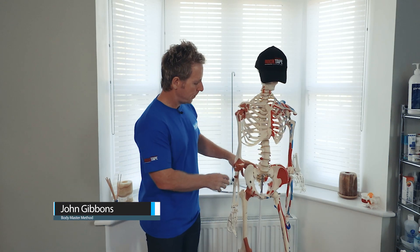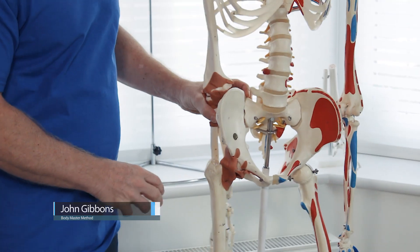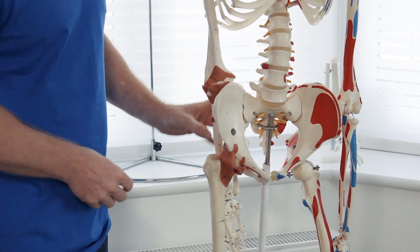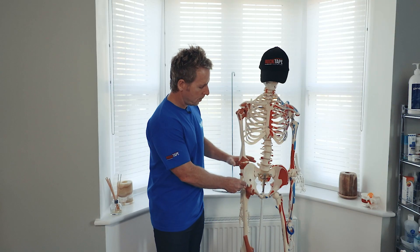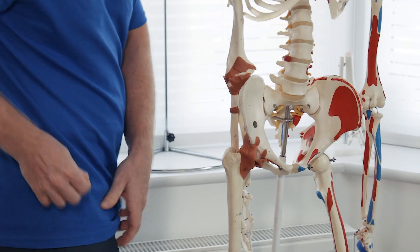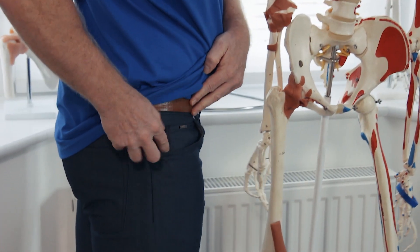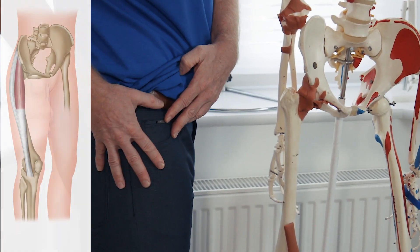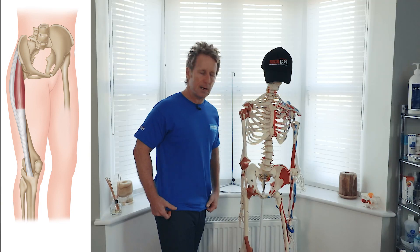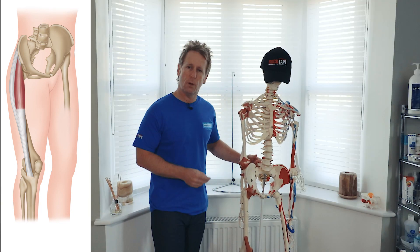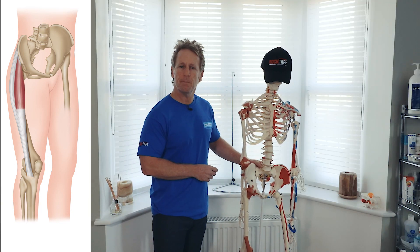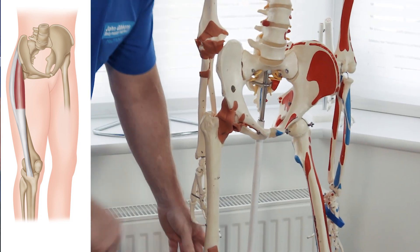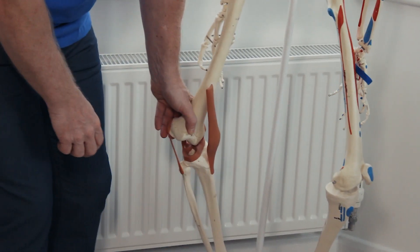The tensor fascia lata is a muscle that comes from the inferior part of the anterior superior iliac spine — roughly where a pocket would be. It travels down as a band or tract called the iliotibial band, or iliotibial tract, going down the whole part of the leg and will insert onto the lateral aspect.